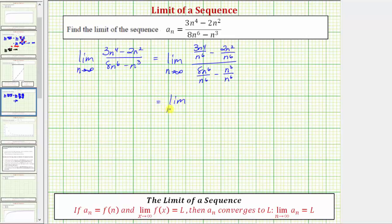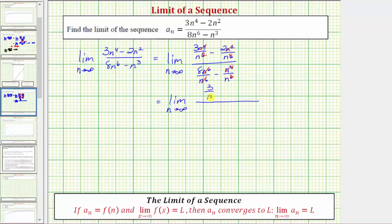Now we simplify each fraction. Three n to the fourth divided by n to the sixth simplifies to three over n squared. Two n squared divided by n to the sixth simplifies to two over n to the fourth. Eight n to the sixth divided by n to the sixth simplifies to just eight. And n to the third divided by n to the sixth simplifies to one over n to the third. So we have the limit as n approaches infinity of three over n squared minus two over n to the fourth, all over eight minus one over n to the third.